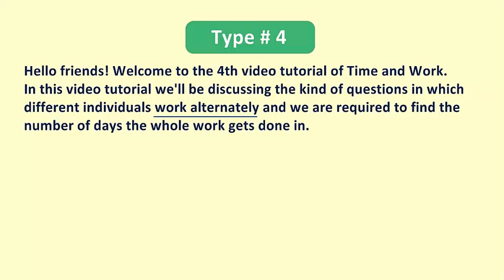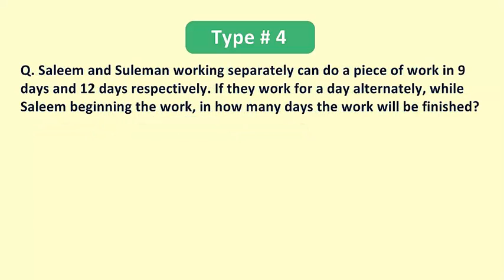Now to understand the approach to solve such questions let's first take an example. Salim and Suleiman working separately can do a piece of work in 9 days and 12 days respectively. If they work for a day alternately while Salim beginning the work, in how many days will the work be finished?